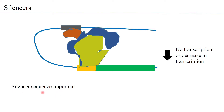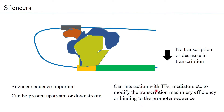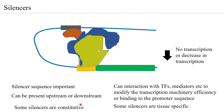Many studies have shown that if there are mutations in the silencer region — that is, if one or two nucleotides in the cis-element change — it affects the repression and transcription increases again. Silencers can be present upstream or downstream of the promoter, so position does not fundamentally matter. They interact with transcription factors or mediators to modify transcription machinery efficiency or binding to the promoter sequence.